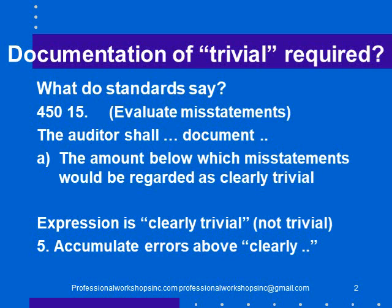The answer is in standards. ISA 450.15, which is the evaluation of misstatements section at the end of the audit, says the auditor shall document the amount below which misstatements would be regarded as clearly trivial. So we should be talking about clearly trivial errors — a clearly trivial error would be even more trivial than a trivial error. The expression is clearly trivial, not just trivial.